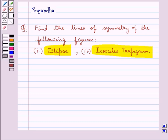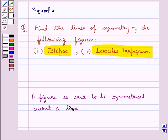Before moving on to the solution, let's discuss what is the line of symmetry. A figure is said to be symmetrical about a line if it is identical on either side of the line.